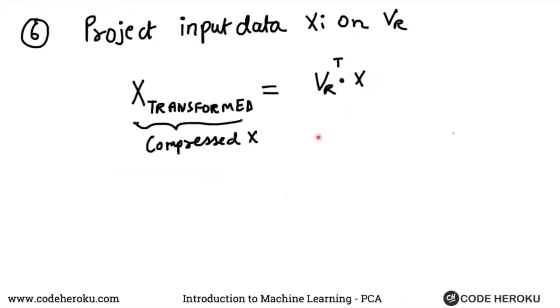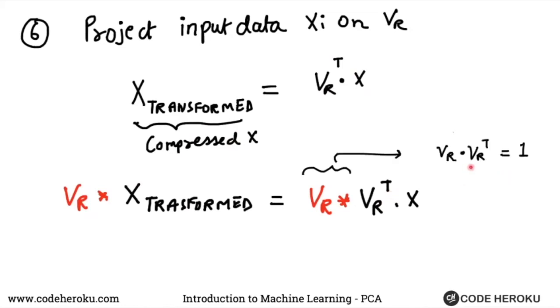Let's say if you have to recover this information, if you have to go back from x transform to x again, how would you do that? If you multiply both sides of this equation over here with vr, what you will end up seeing is this vr times vr transpose is a unit matrix because that's a property of our eigenvector. Because this is one, this will be equal to x itself. This part will become one, we still have x.